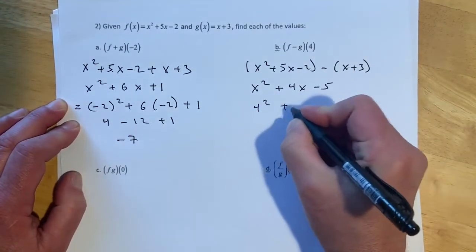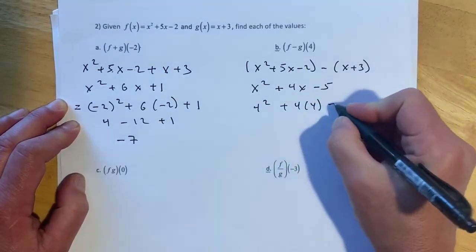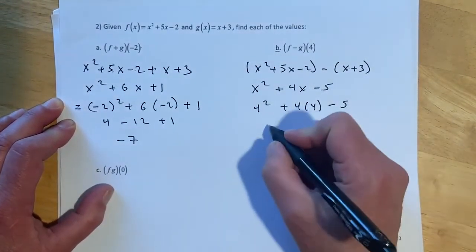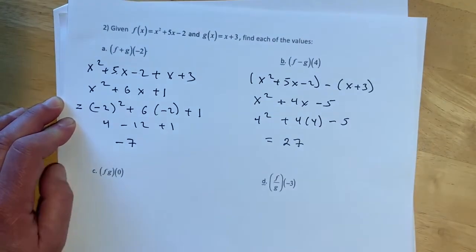And then we're evaluating this at 4. So 4 squared plus 4 times 4, minus 5. So that is 16 minus 5, so that should be 27.